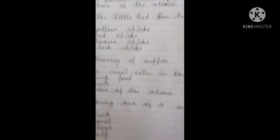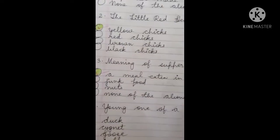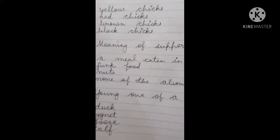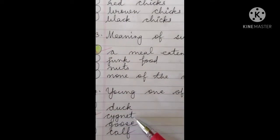Meaning of supper is a meal eaten in the evening. Next is young one of a swan. Young one of a swan is called signet.